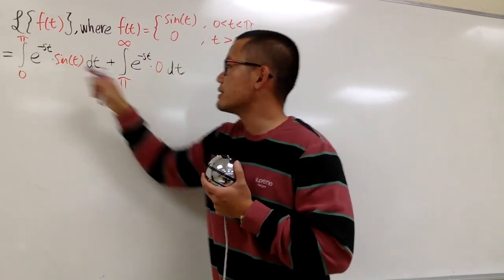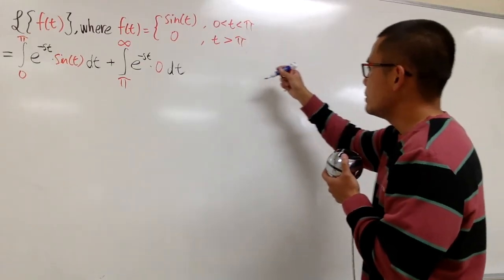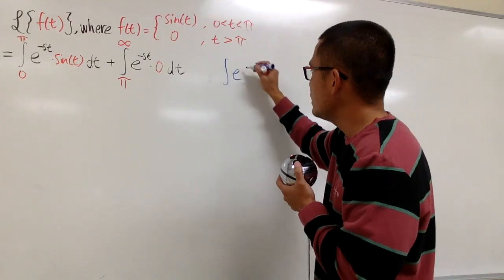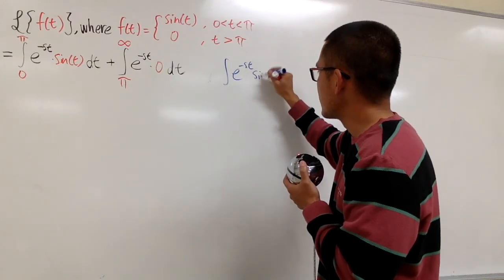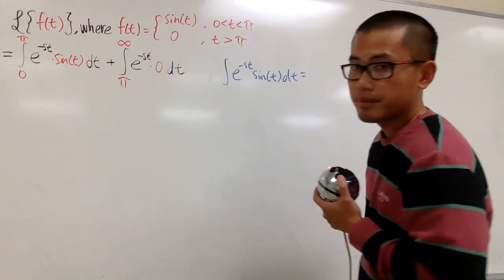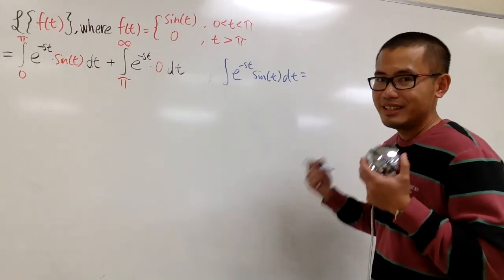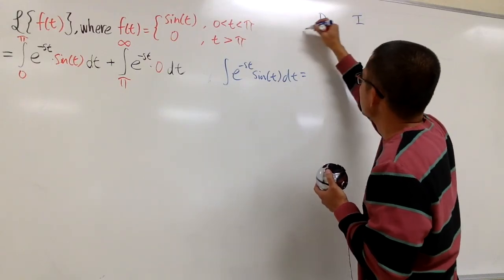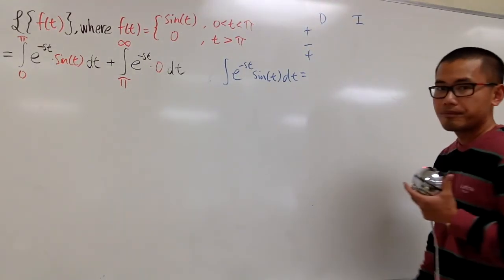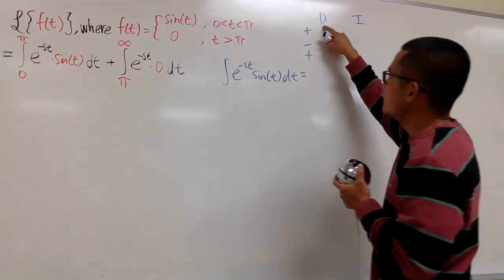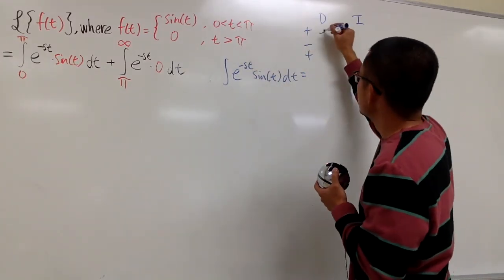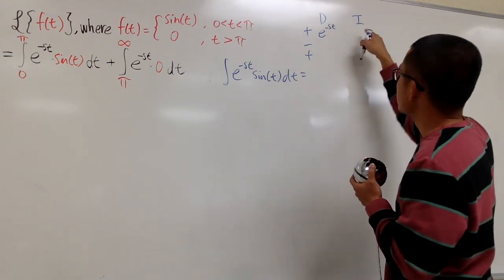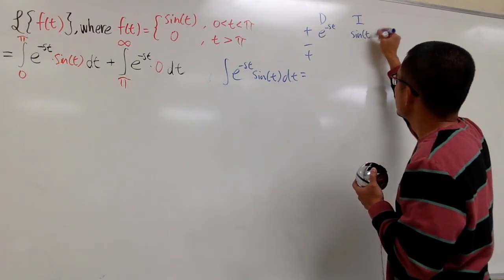We have to figure out the integral of e to the negative st times sin(t) dt. To integrate this, we use integration by parts — and of course, let's do the DI method. So let's set up D and I columns with plus and minus signs. I am going to differentiate e to the negative st and integrate sin(t).